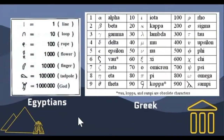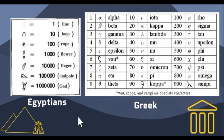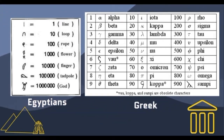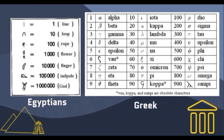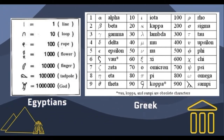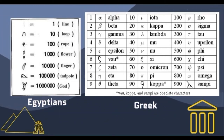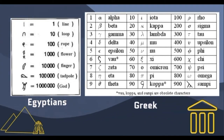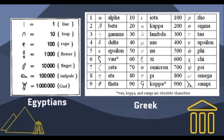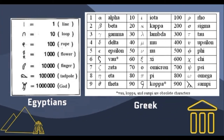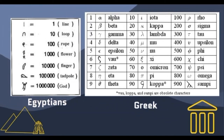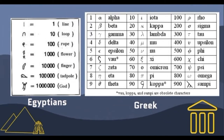Egyptians and Greeks used a base-10 number system. The Egyptians used pictures, while the Greeks used symbols to represent numbers. Both systems had problems representing higher numbers, as they required too many characters or symbols which repeated frequently.